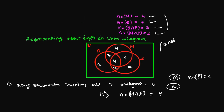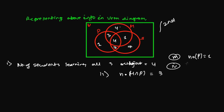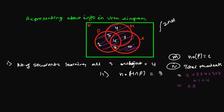The fourth question: how many students are there altogether? We add all sections: 1 (physics only) + 3 (math and physics only) + 4 (all three) + 3 (statistics and physics only) + 7 (statistics only) + 1 (math and statistics only) + 4 (math only) = 23 students altogether.